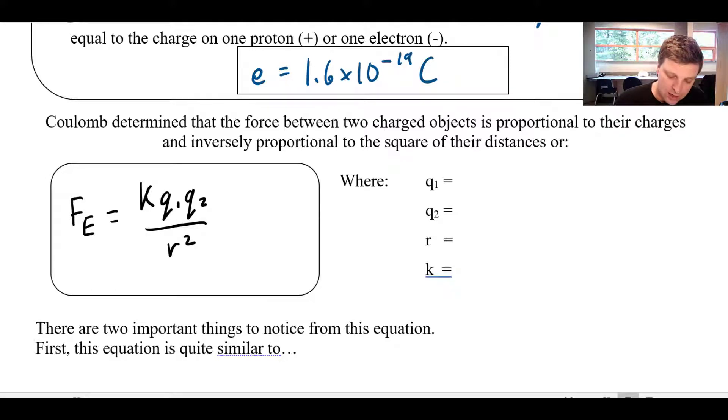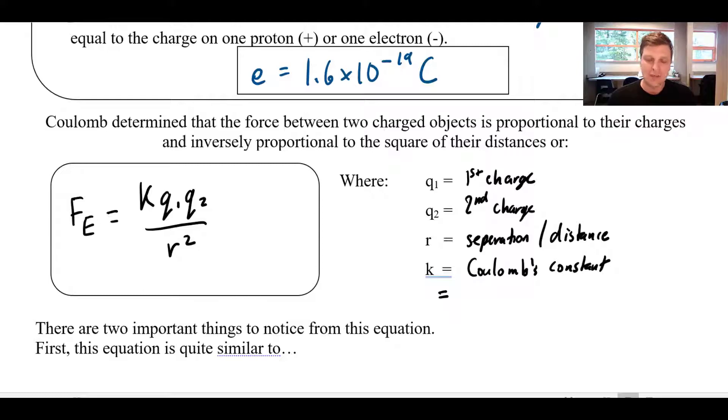In this case, q1 is just the amount of charge on the first charge, so how many Coulombs that first charge has. And q2 is the second charge. R is our separation, or the distance between the two charges, how far apart they are. And then k is a constant that we call Coulombs constant. It has a value of nine times 10 to the nine Newton meters squared per Coulomb squared.